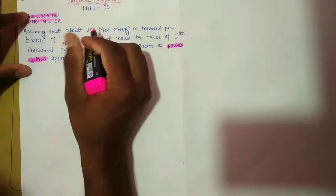Using Avogadro's number 6.02 into 10 to the power 23, we get 1.0534 grams which equals 1.05 into 10 to the power minus 3 kg. The conclusion is that the mass of uranium-235 consumed per day in the fusion reactor of power 1 MW is approximately 1.05 into 10 to the power minus 3 kg, and this is our required answer.